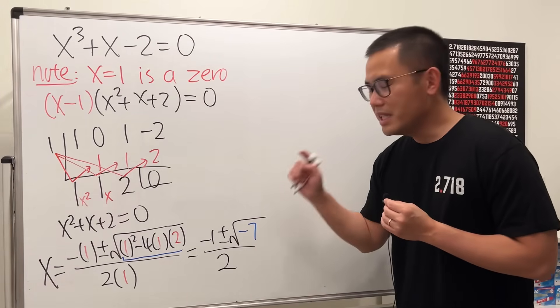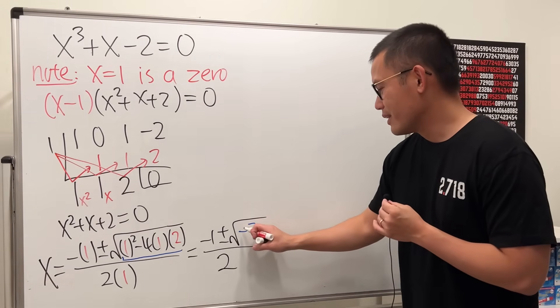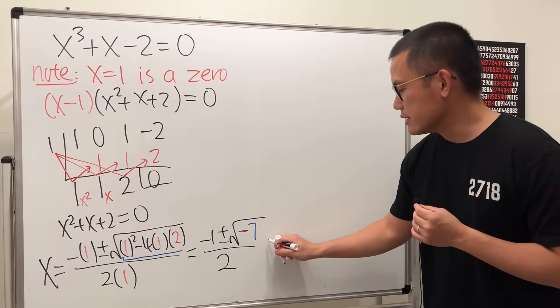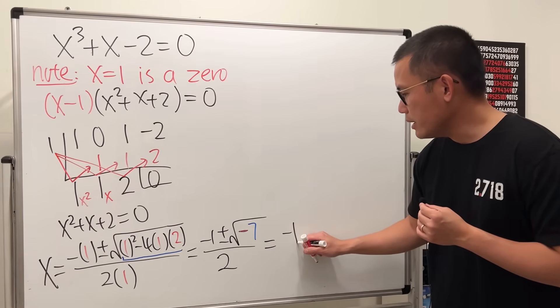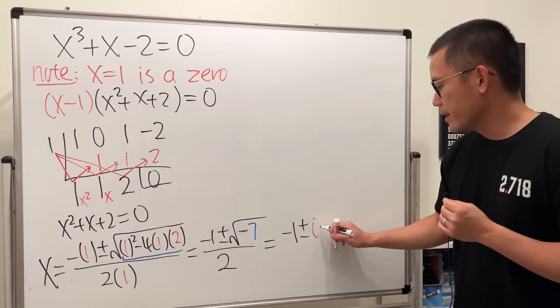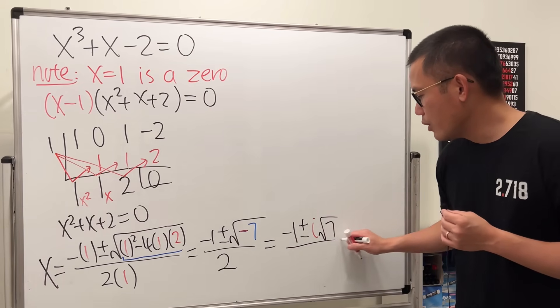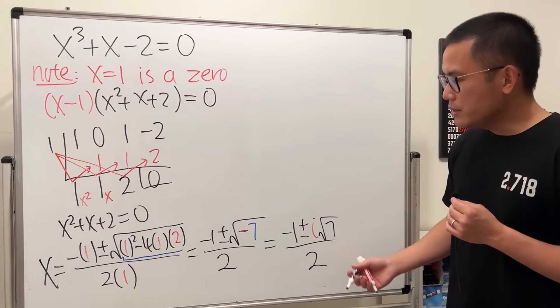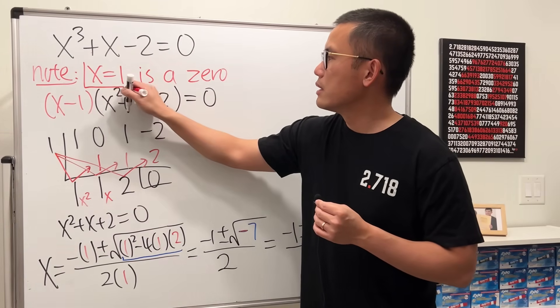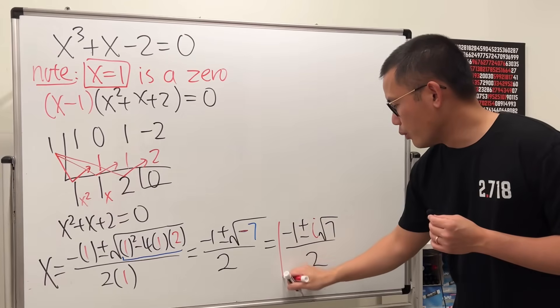Well, we have a negative inside of the square root, so if you have done complex numbers already, then you can continue and can say this is equal to negative 1 plus or minus the imaginary unit i times square root of 7, all over 2. So as you can see, we actually have three answers: the first one is right here, and then we have two more from here.